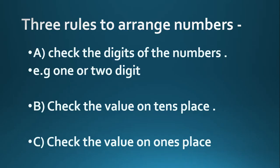Before arranging the numbers, there are three rules that we should keep in mind. The first rule is: check the digits of the numbers — whether they are one digit or two digits. For example, 2 is a one-digit number and 12 is a two-digit number. Single digit or one-digit number is always smaller than a two-digit number.